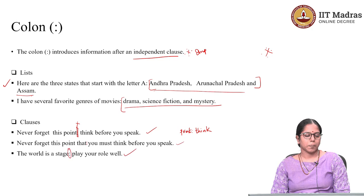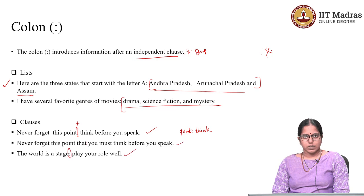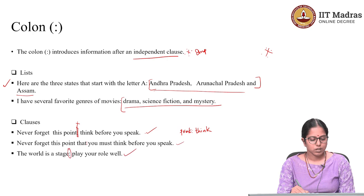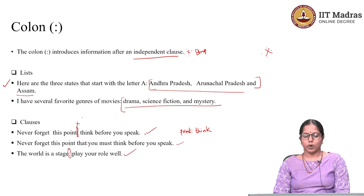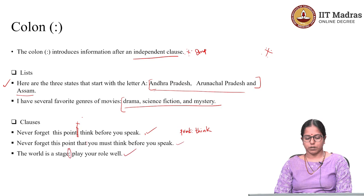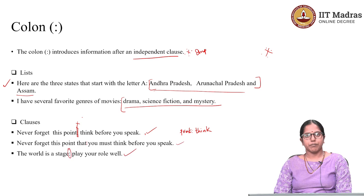It need not always be a list that follows a colon. A clause can also be introduced after a colon. For example: 'Never forget this point: think before you sleep.' Here, after the independent clause 'never forget this point,' you introduce another clause by inserting a colon. When you use a colon, do not add a space before it, but you should definitely add a space after it.